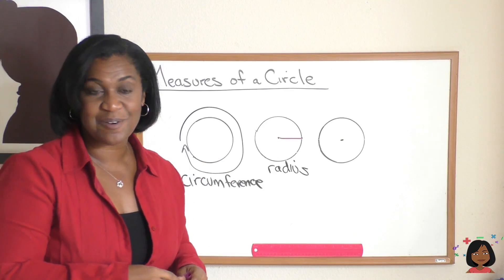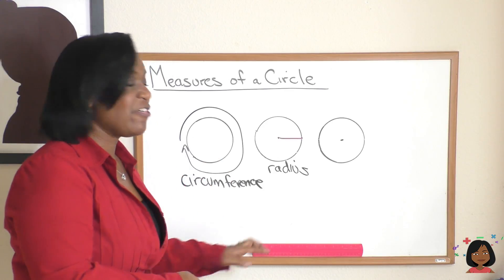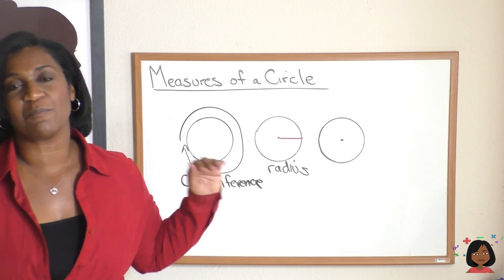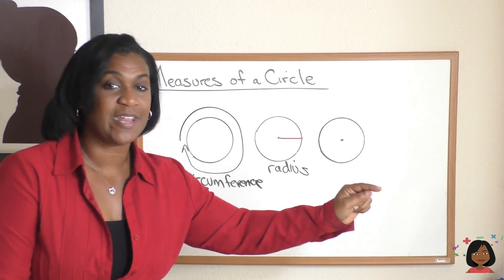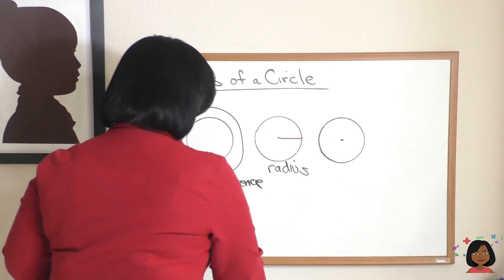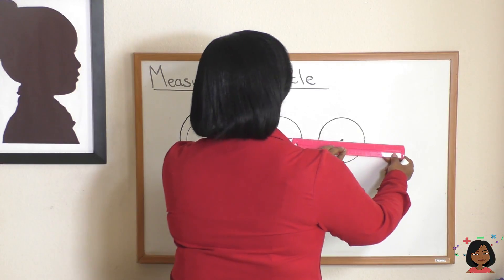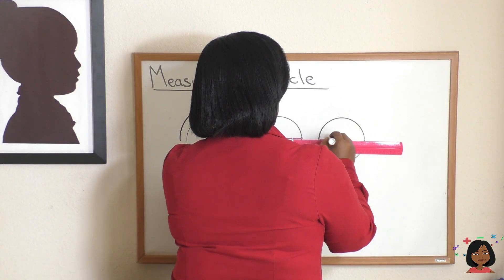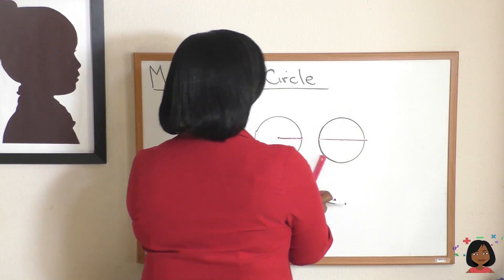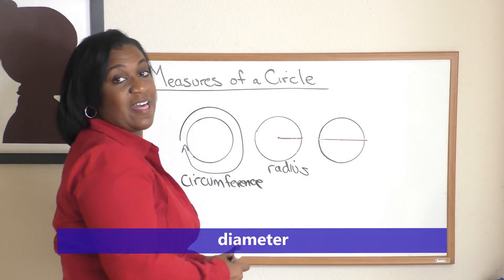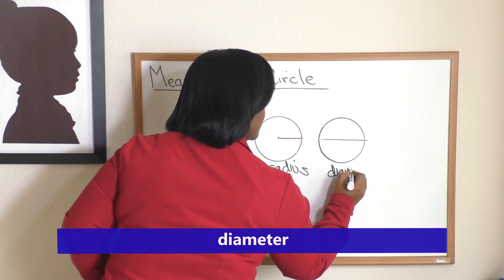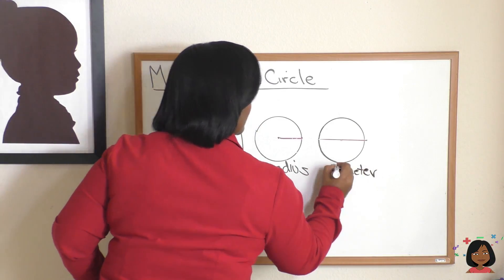Okay, I've got another term for you. Rather than just going from the center, let's say we wanted to cut this circle completely in half, we want to go from one end of the circle, one edge, completely to the other side, so let me draw that for you. Right through my center. We call that the diameter.